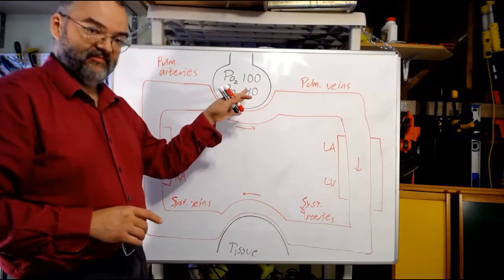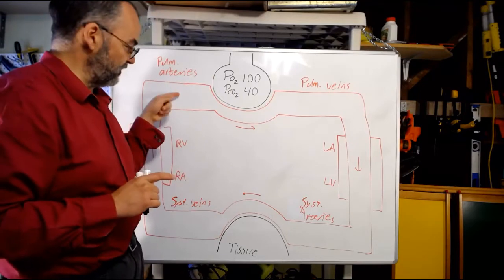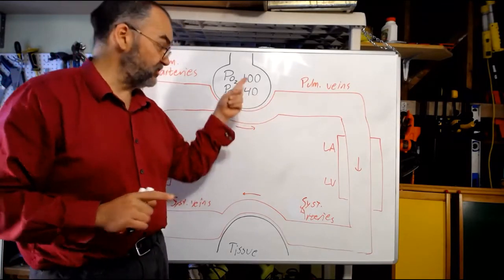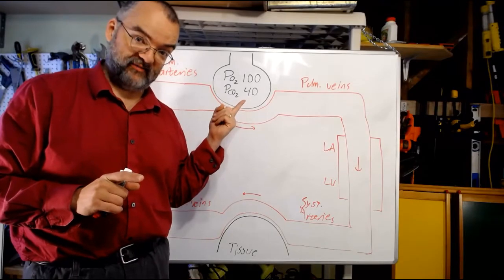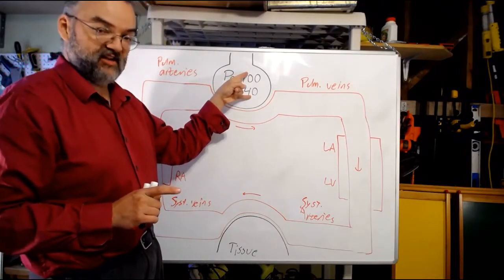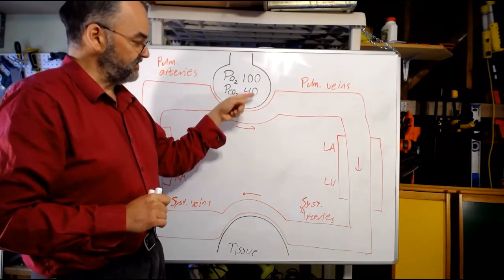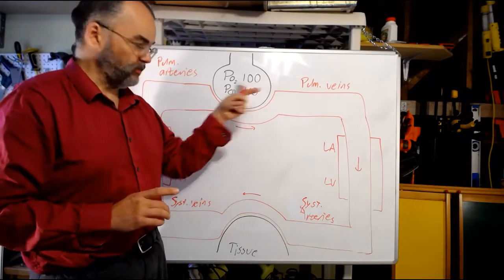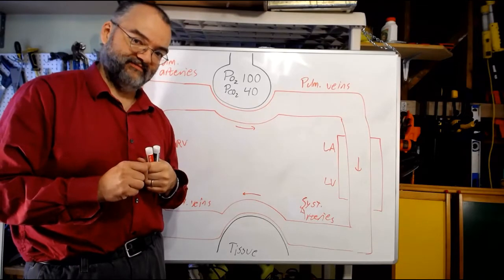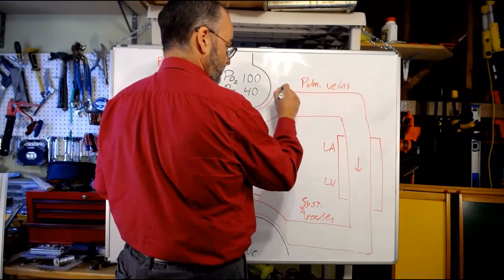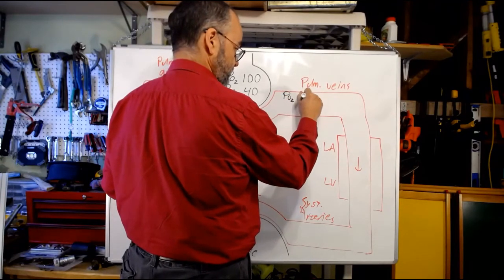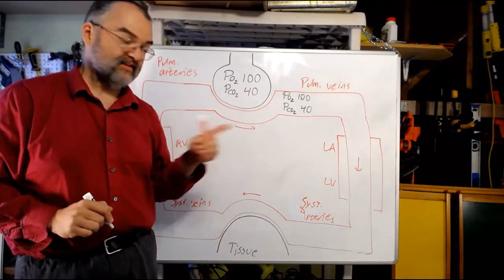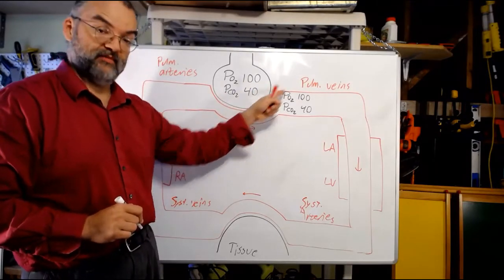Let's start here. As blood moves around the alveoli, it exchanges gases with the alveoli until it reaches equilibrium with that air. So assuming these alveolar numbers stay constant, the blood is reaching equilibrium with this air — what will the pO2 and pCO2 be by the time we get out of the lungs? If we've reached equilibrium, the pO2 and pCO2 in the pulmonary veins should match whatever's in the alveoli. If it's 100 here, it should be 100 here at equilibrium.